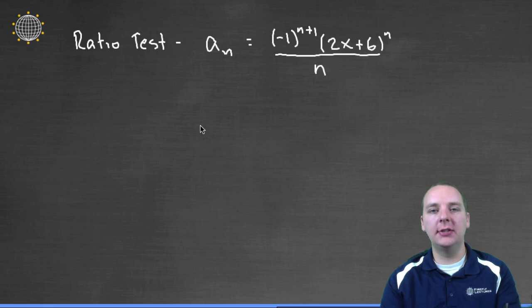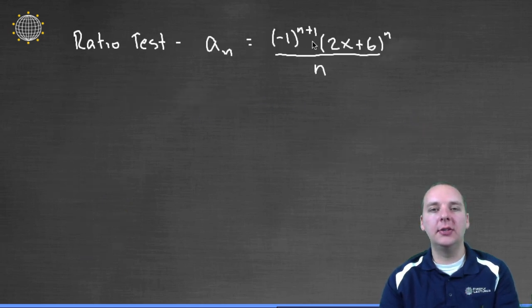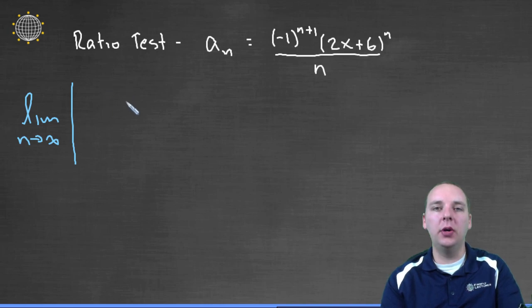So let's use the ratio test for this particular series here. So I have minus 1 to the n plus 1 times 2x plus 6 to the n all over n. So that's going to be my a sub n. And the ratio test would say let's take the limit as n goes to infinity of the absolute value of a sub n plus 1 divided by a sub n.